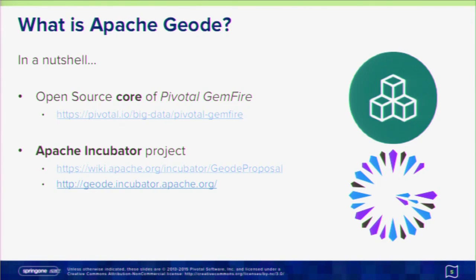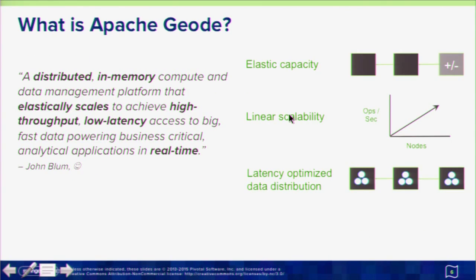So what is Apache Geode? In a nutshell, it's the open source core of Pivotal GemFire. Pivotal GemFire was open sourced by Pivotal and submitted to the Apache Software Foundation, currently in incubating status. More specifically, Apache Geode is a distributed in-memory compute and data management platform that can elastically scale to achieve high-throughput, low-latency access to both big and fast data, powering business-critical and analytical applications in real-time.